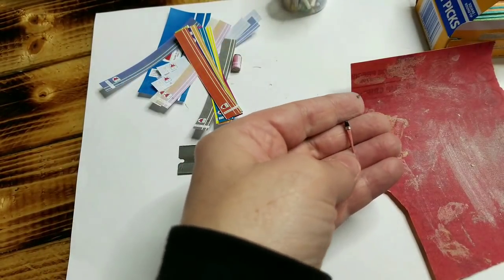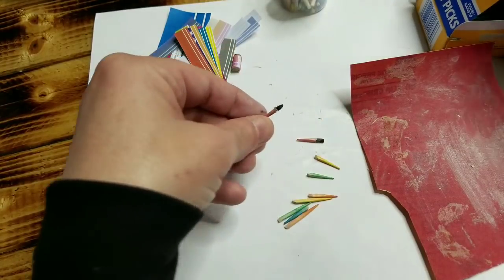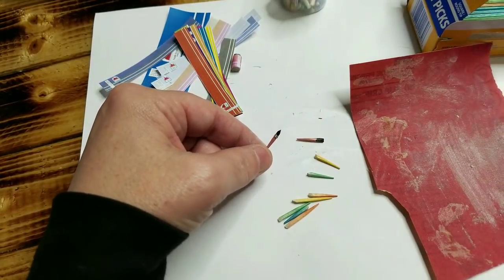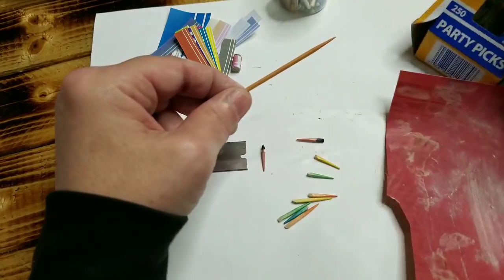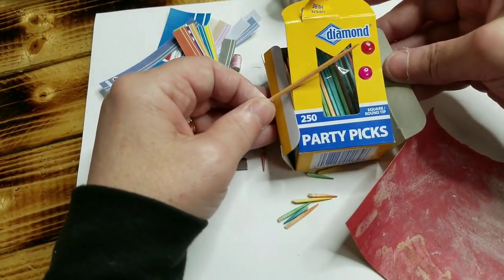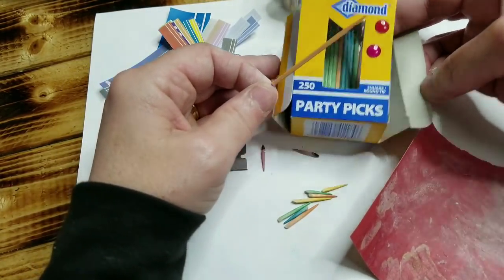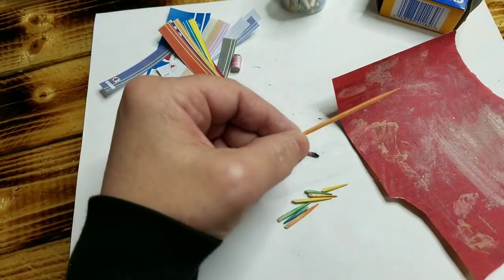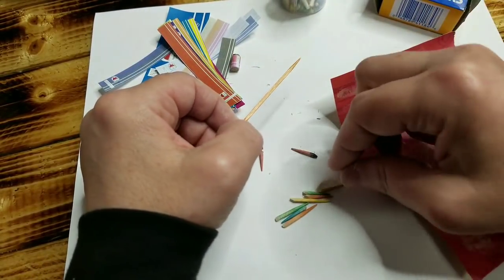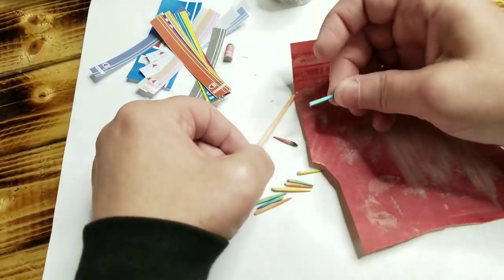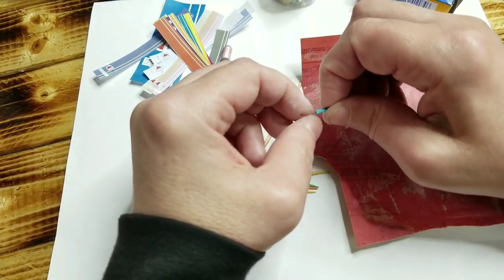So now if you want to make a paint brush that looks like this, what you want to do is get yourself some of these flat toothpicks. They're called party picks. They're square with a round tip. So you want to go ahead and cut the tip of it off. Once you get it cut off, it should look like this. And then this part is square.